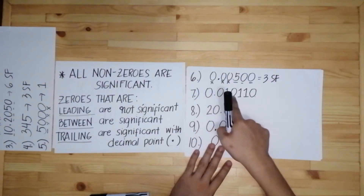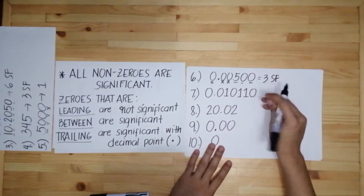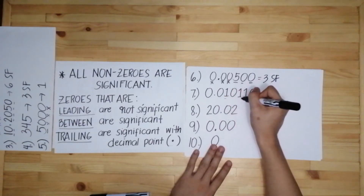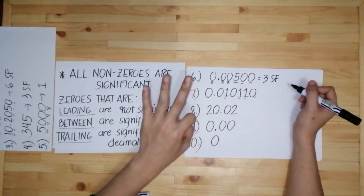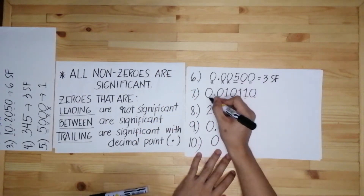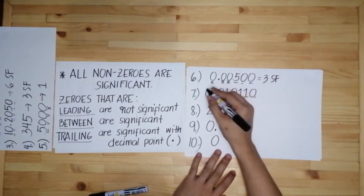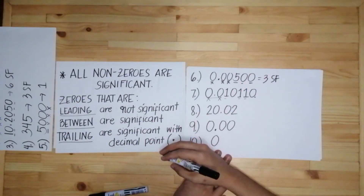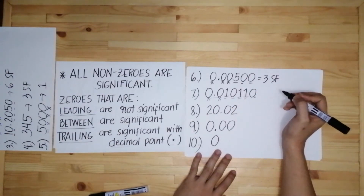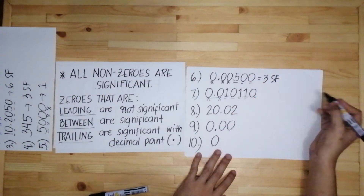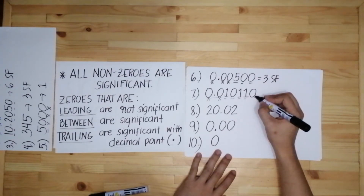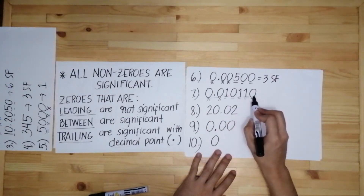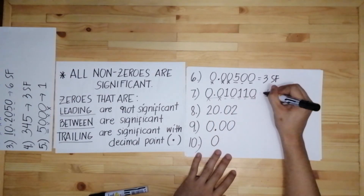Number seven, we have 0.010110. Since we have three non-zero numbers — three ones — we already have three significant figures. We have two leading zeros at the beginning: not significant according to the rule, regardless of whether there is a decimal point. The zero between the two ones is 'between' — significant. There is one trailing zero that is considered significant because there is a decimal point. So all in all, excluding the leading zeros, we have five significant figures.